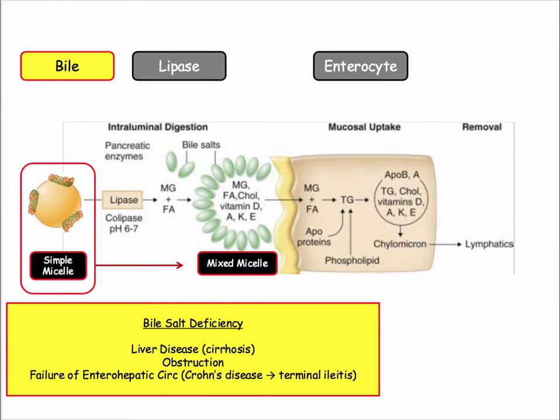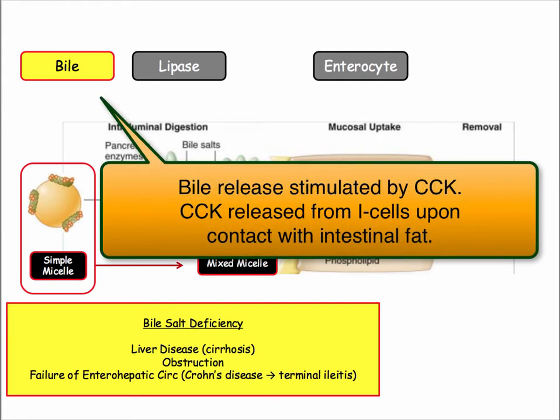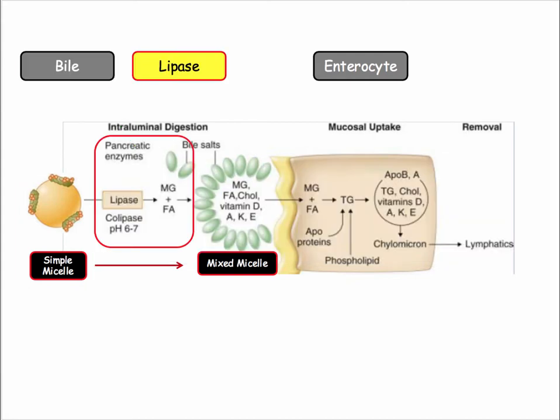Bile release from the gallbladder is stimulated by cholecystokinin, which in turn is stimulated by the I-cells of the intestine upon contact with fat. The next player involved in fat absorption is the pancreas. The pancreas releases both lipase and colipase, with the function of colipase being to neutralize the pH so that lipase may hydrolyze fats.